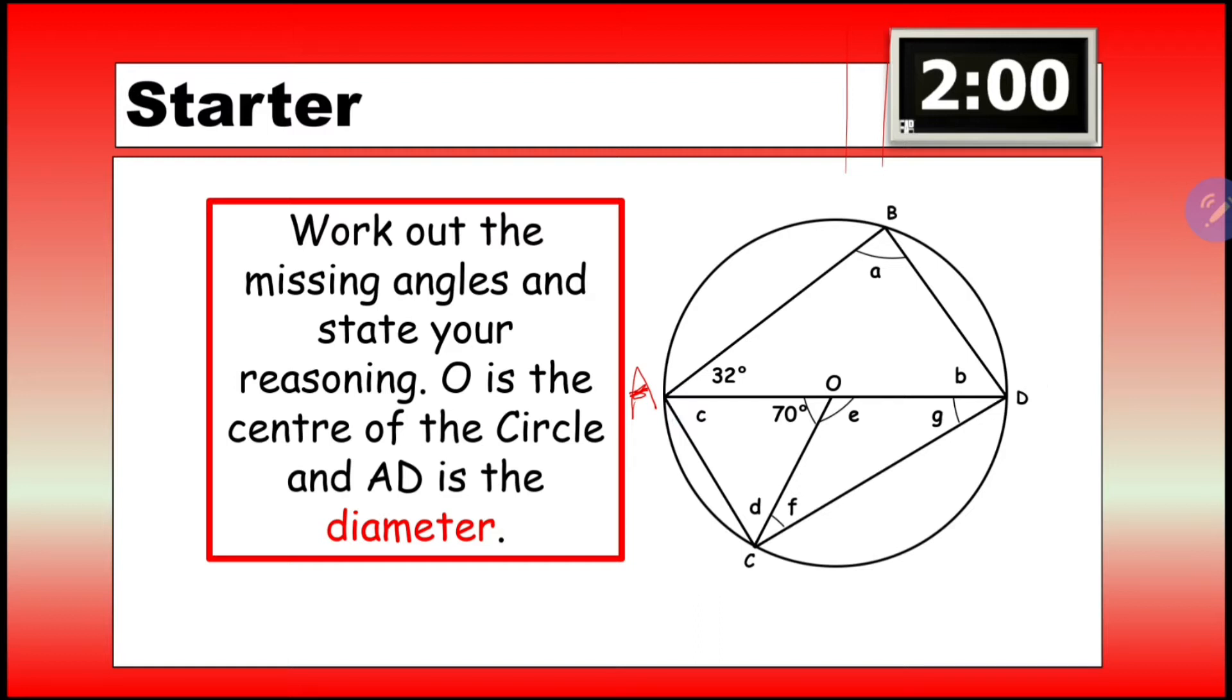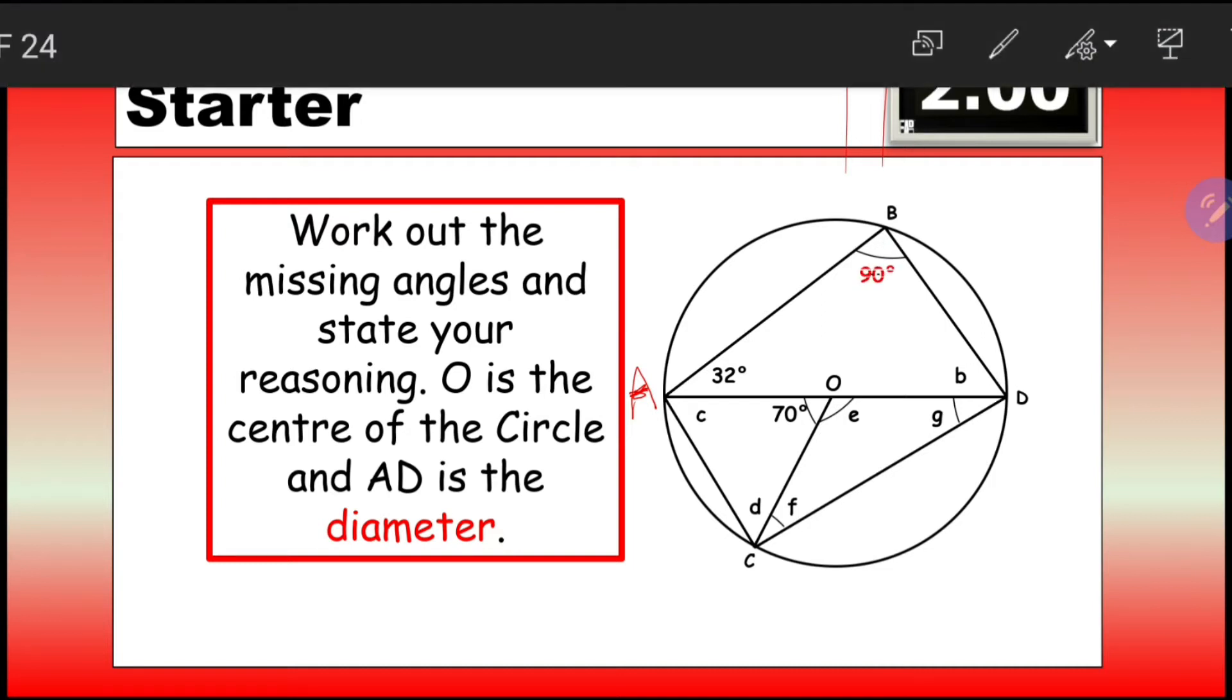So this goes back to one of the first rules I taught you on circle theorems, and that is that the angle at the circumference of a semicircle is 90 degrees. So here is our semicircle, this top part here, and there's the angle at the circumference. So automatically, we know that that's 90 degrees.